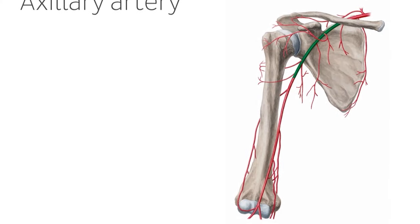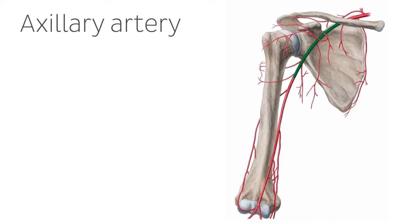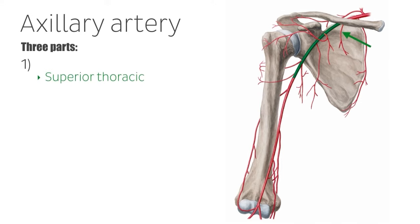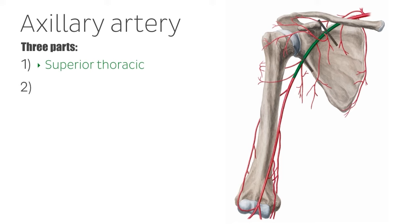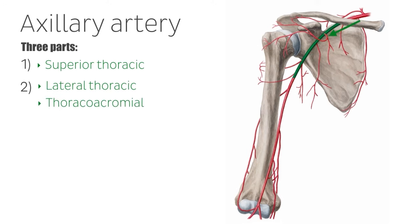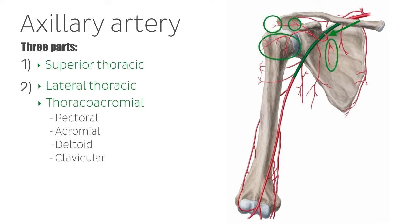The axillary artery, highlighted in green and surrounded by the brachial plexus within the axilla, can be divided into three parts. The first part gives off one branch: the superior thoracic artery. The second part, which is slightly longer than the first, gives off two branches: the lateral thoracic artery and the thoracoacromial artery. Note that the thoracoacromial artery gives rise to four branches called the pectoral, acromial, deltoid, and clavicular branches.